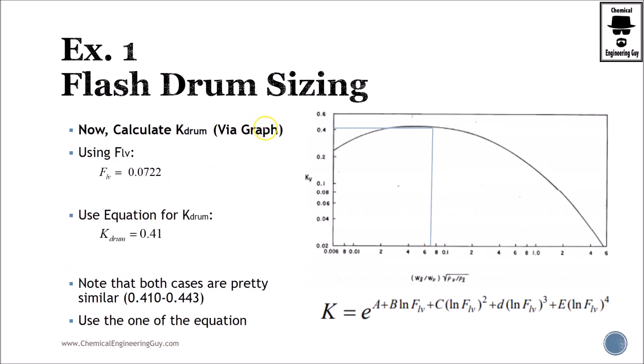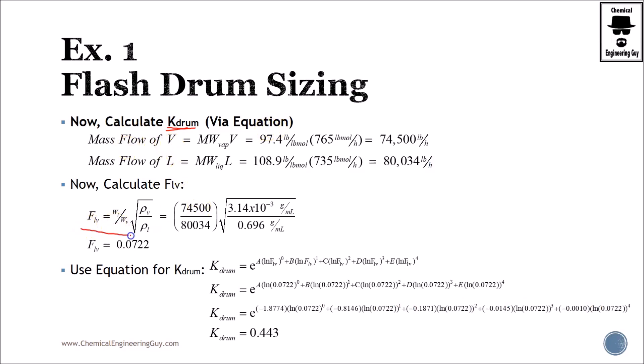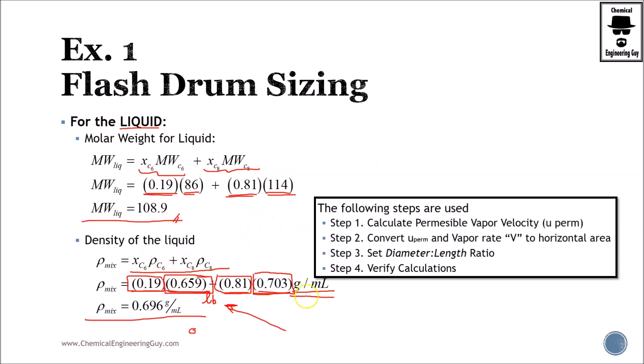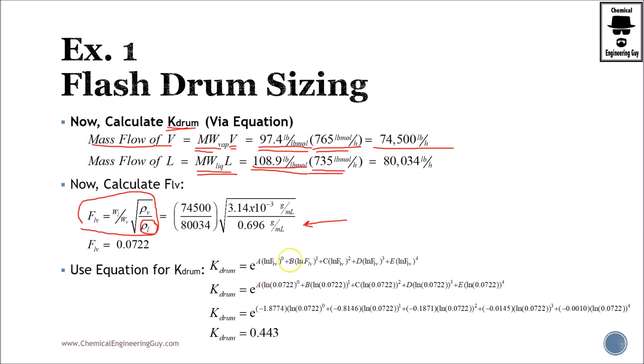Now it's time to calculate KDRAM. We will do this via equation and via graph. Via equation, we will need to calculate FLV. We substitute the WV, which is the mass flow of the vapor. It's molar flow rate times its molecular weight or average molecular weight. We get this value. Then we have mass flow of liquid will be the same, but for the liquid, molar weight times this part here. The densities, once again, the liquid density, in my opinion, makes a little bit sense. But remember that you must ensure that this is correct. My opinion is not that complex, because you will see later on that these fractions do not change when you change them to mass. So it should be something similar to this.